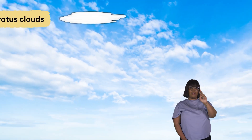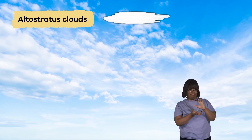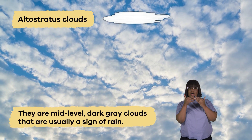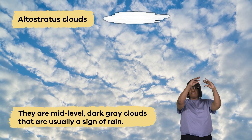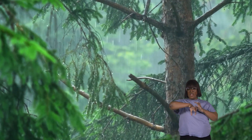Next up are altostratus clouds. They are dark gray, mid-level clouds. If you see them in the sky, they are usually a sign of rain.